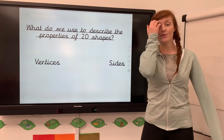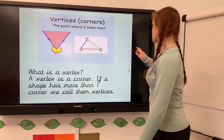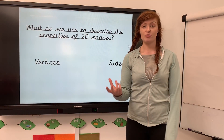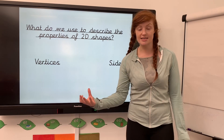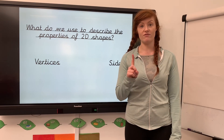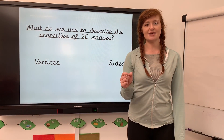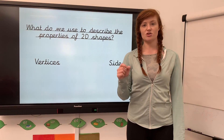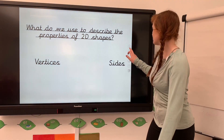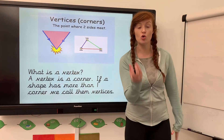So now we've remembered the names of those 2D shapes, we're going to see whether we can describe them using properties. We describe the properties of 2D shapes using vertices, which is the number of corners - or one vertex - and sides. We're going to identify different 2D shapes using the number of vertices and the number of sides.